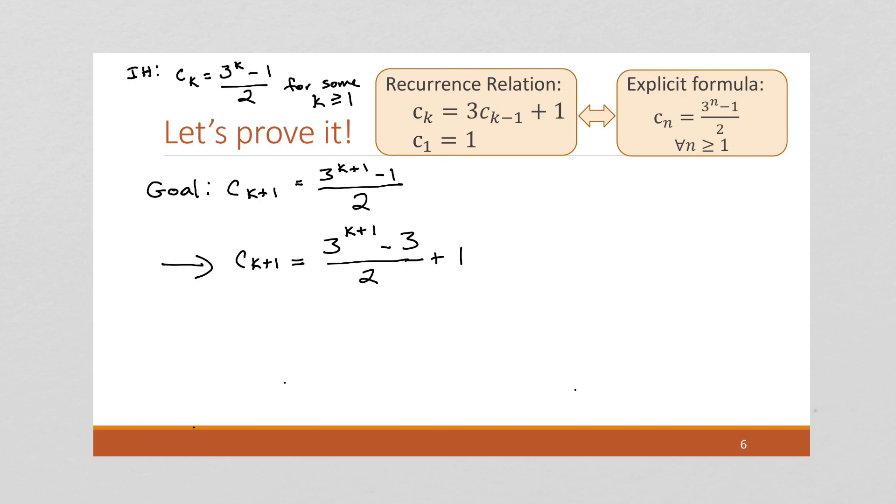And so what I'm going to do is I'm going to change this 1 into a 2 over 2. Or you can think of me multiplying a 2 over 2 by it. But what this is going to do is now I have common denominators. So I can combine these and I have 3 to the k plus 1 minus 3 plus 2 all over 2.